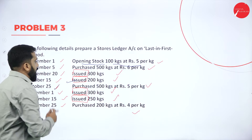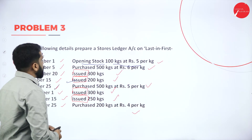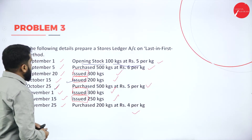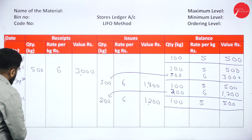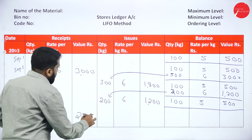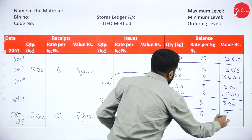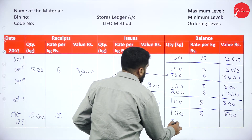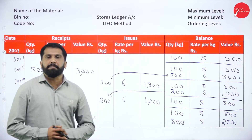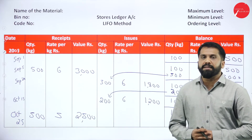After October 15th, we have October 25th. They have purchased 500 kg at Rs 5, which is 2500. What is the old balance? We have 100 kg at Rs 5, that is 500. New balance: old balance of 100 at Rs 5, plus new purchase 500 at Rs 5, which is 2500. Any doubt up to this? We are done up to October 25th.